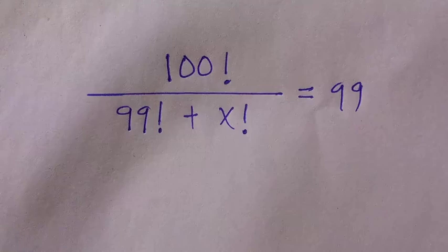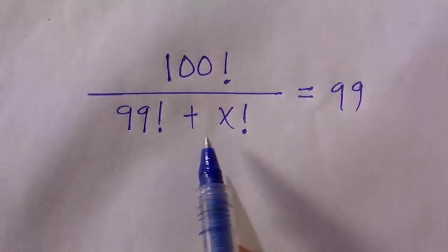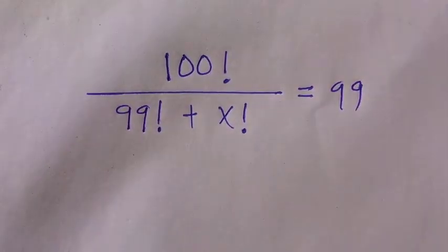If you are given 100 factorial divided by 99 factorial plus x factorial equals 99, to solve this...